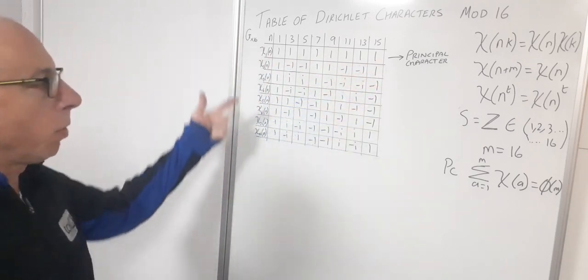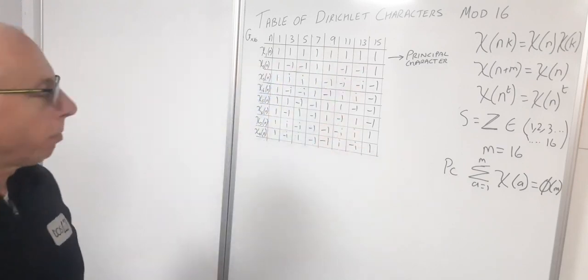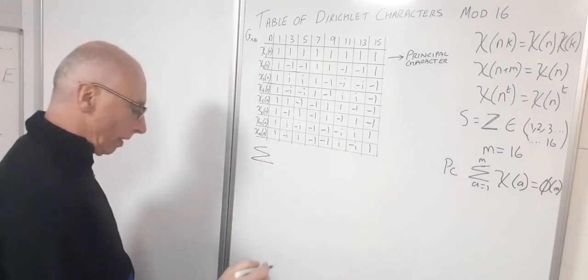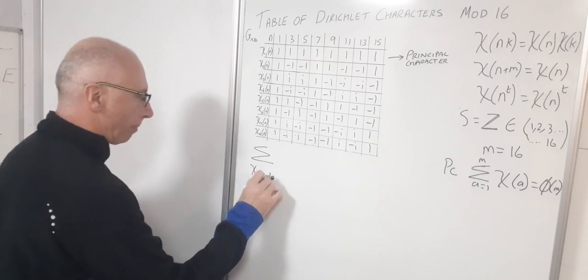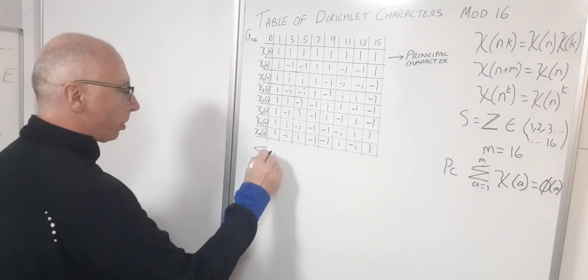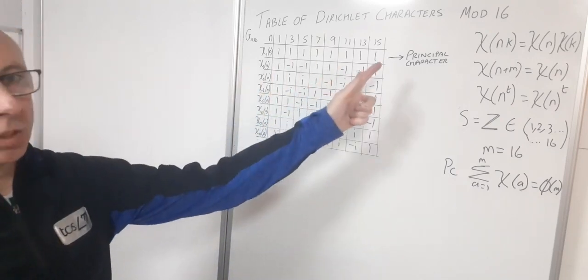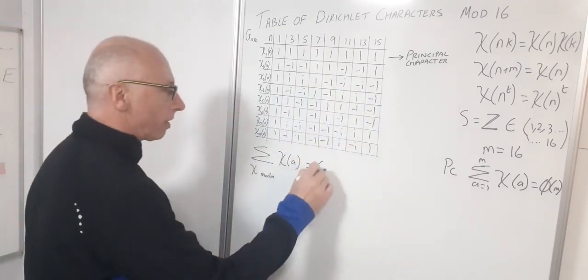Now what about the rest, the ones which are not principal characters? The next property is: if we sum them all up from chi modulus m, in this case modulus 16, and we sum them all up, so chi of a, all of the numbers from 1 to 16, we get zero.